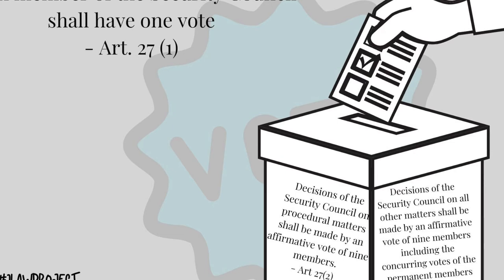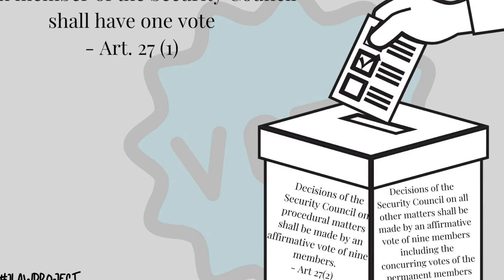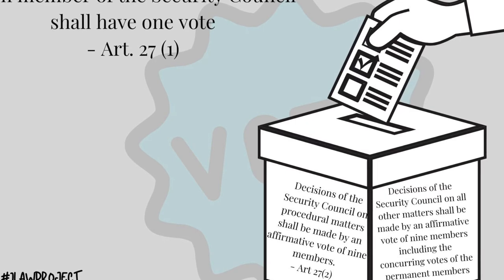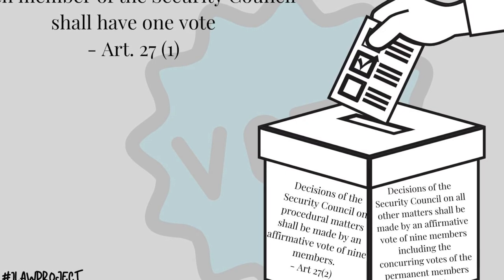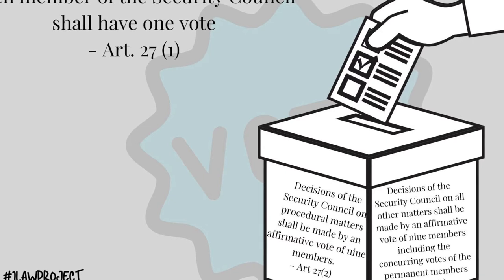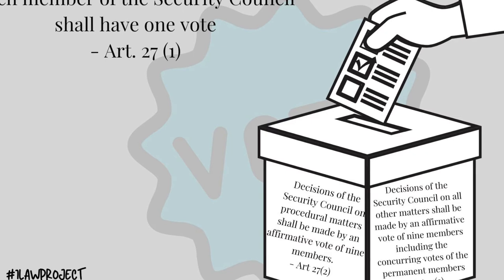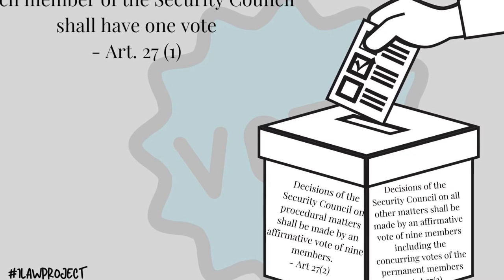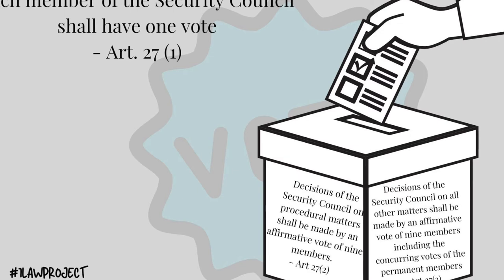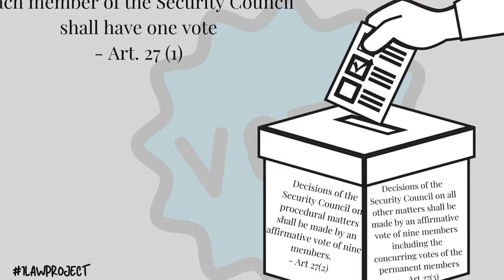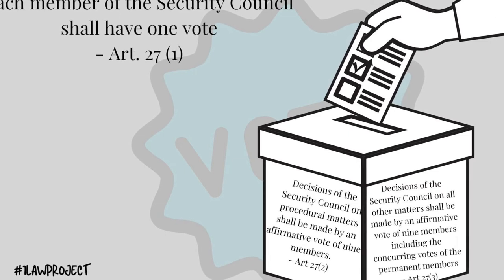As with members of the General Assembly, members of the Security Council also have voting rights. But how these voting rights are exercised differs for the permanent and non-permanent members. Generally speaking, each member has one vote. Where a matter deliberated on at the Security Council is a procedural one, to pass it needs to secure an affirmative vote of nine of the 15 members.